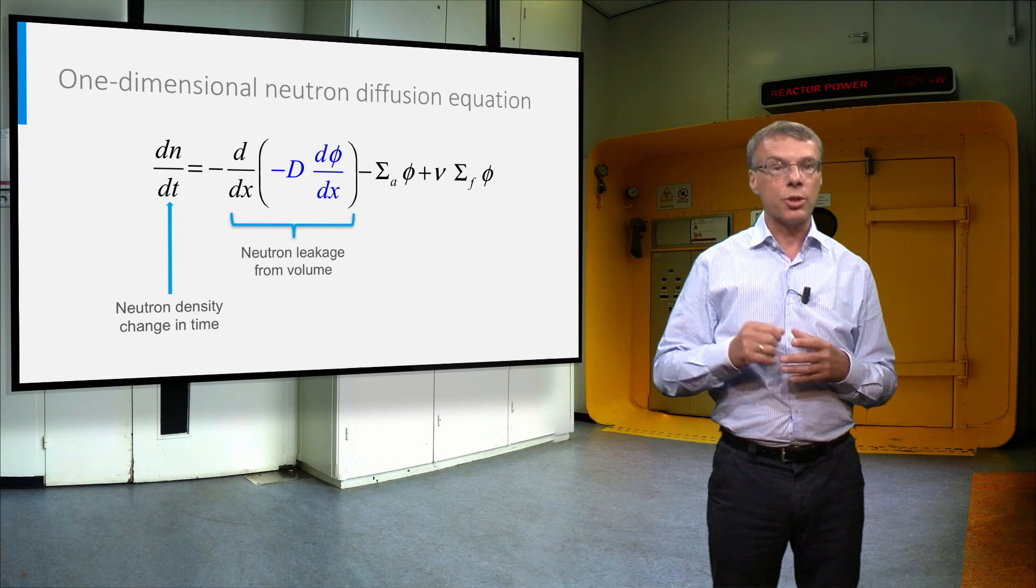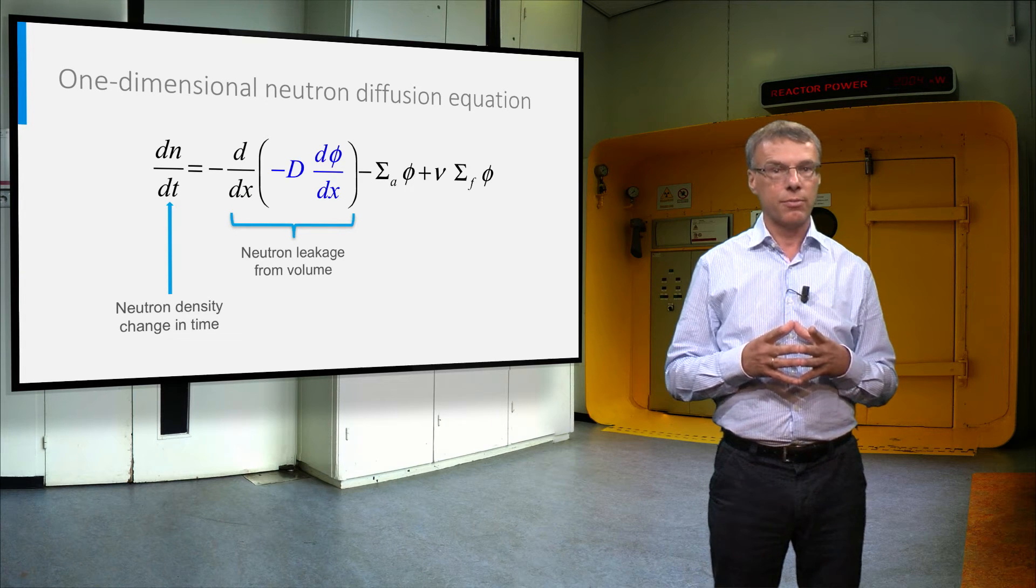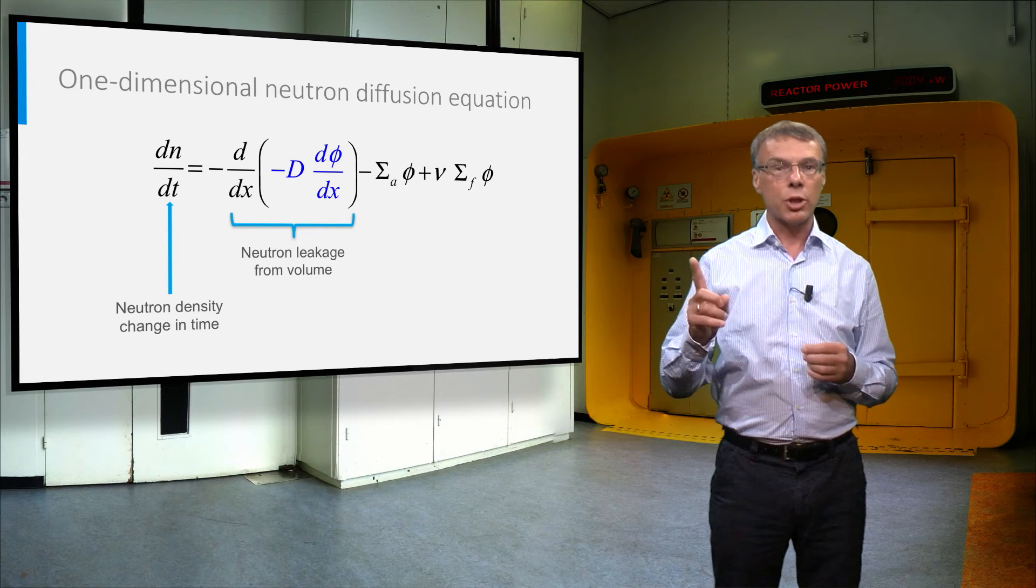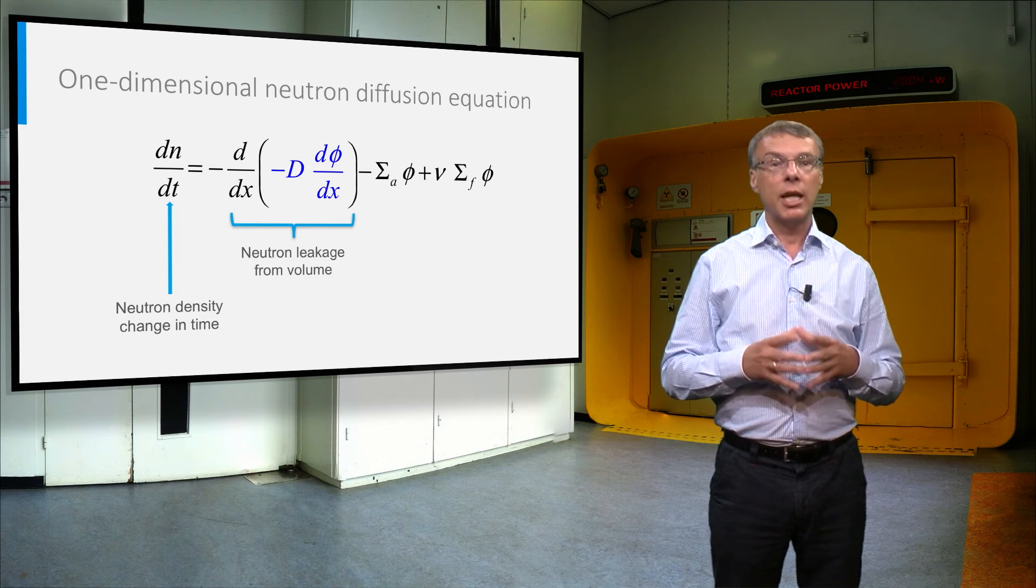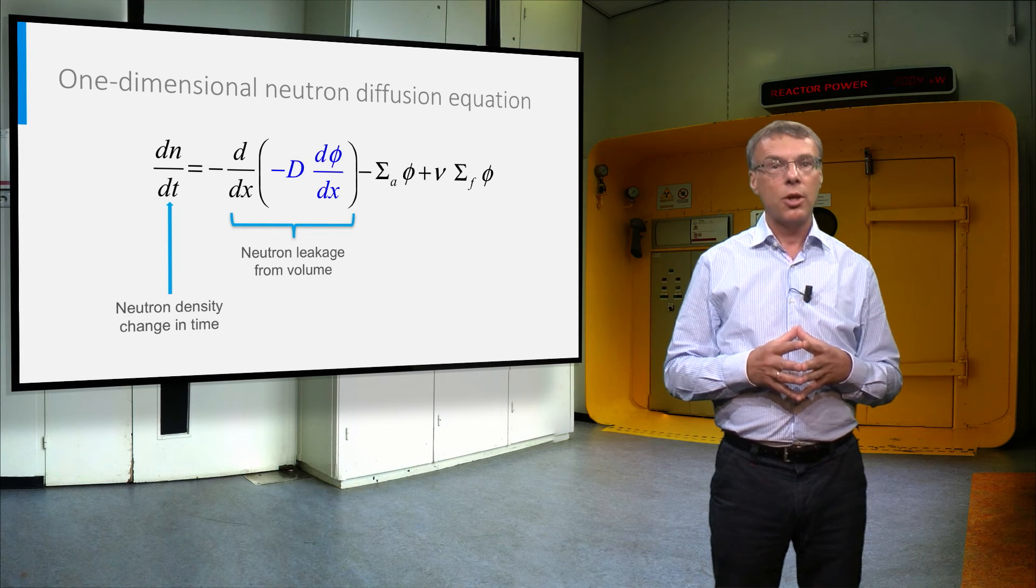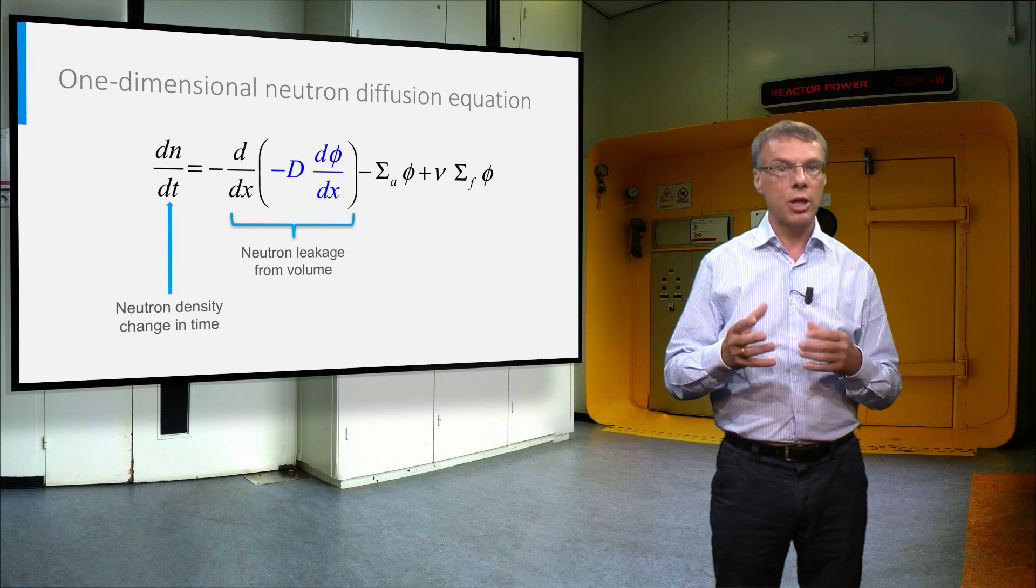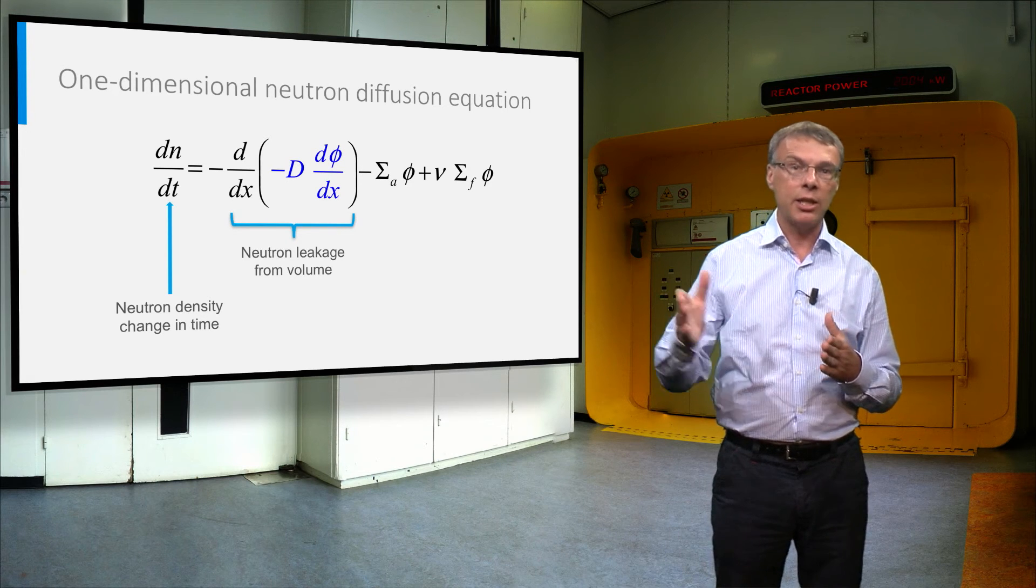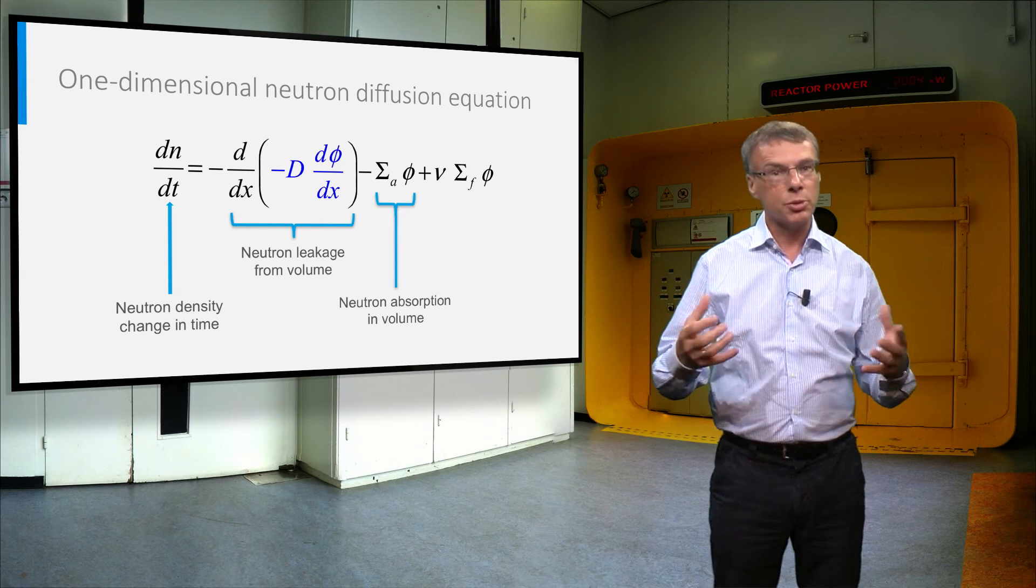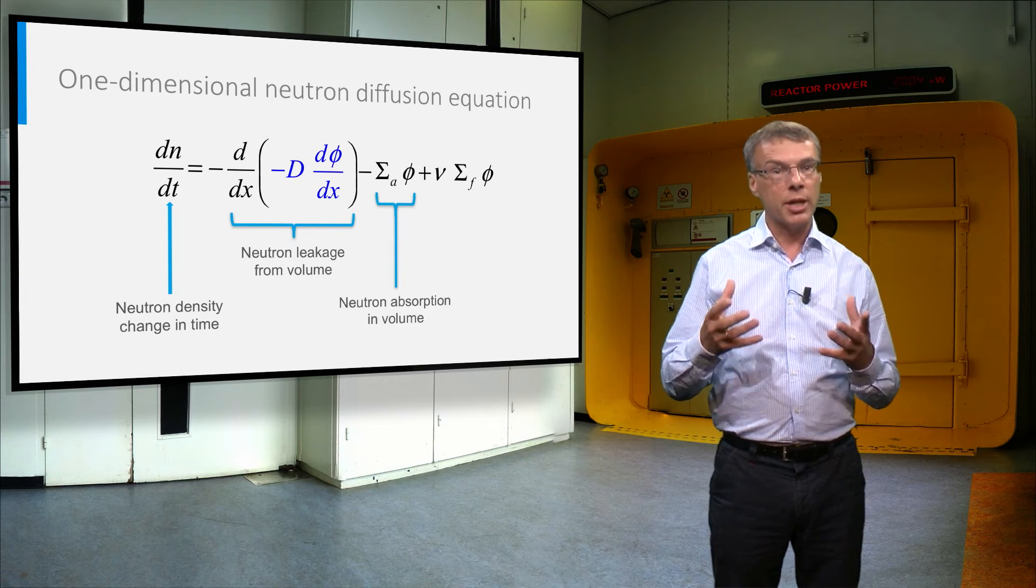The first term on the right-hand side describes the flow of neutrons in the x-direction. We would have similar terms with y and z in the three-dimensional problem. The term in blue between brackets is a neutron current density in diffusion theory using Fick's law. Note that we have two minus signs here because a leakage is counted as a loss term in the balance equation, which adds another minus sign in front of it. The second term on the right-hand side is the absorption rate of neutrons, which is also a loss term, and which has therefore also a minus sign in front of it.